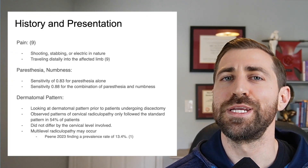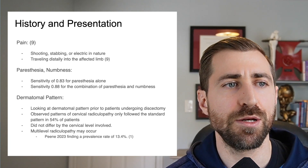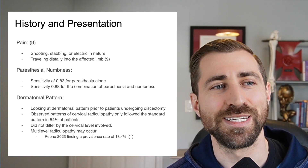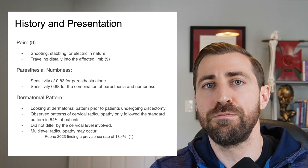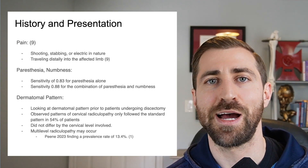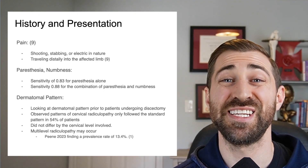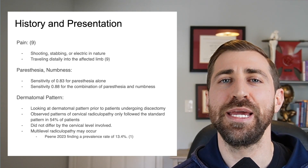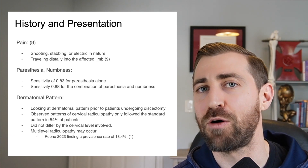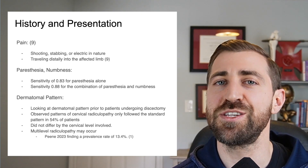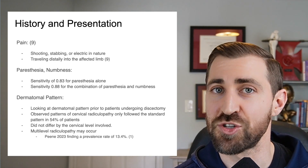When patients with cervical radiculopathy describe their pain, they usually describe it as shooting, stabbing, or electric in nature, and it usually travels distantly into the affected limb. A lot of folks will say they have pain that radiates down and shoots into their fingers or thumb — classic sign of cervical radiculopathy. In terms of paresthesia and numbness, the presence of paresthesia alone had 83% sensitivity. The combination of paresthesia and numbness had 88% sensitivity. So no numbness and no paresthesia is a good indication you don't have cervical radiculopathy.